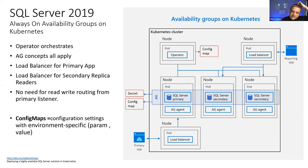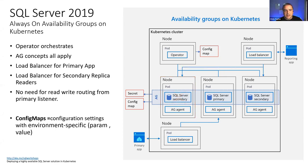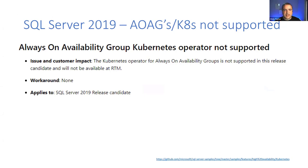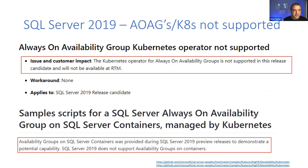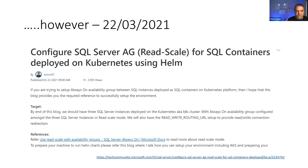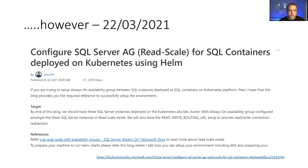When SQL Server 2019 came out, one of the big things being pushed was Always On Availability Groups on Kubernetes — there was a lot of marketing around it. Then all of a sudden Microsoft turned around and said it wouldn't be supported. Up until last month there wasn't much information out there about it, but at the back end of March they started pushing availability groups on Kubernetes again, so it does look like something that is coming.